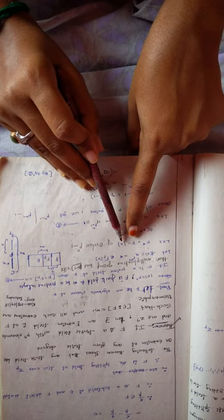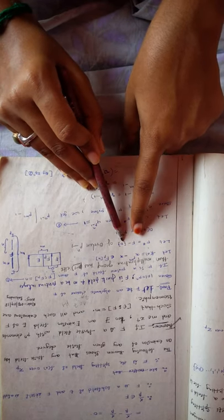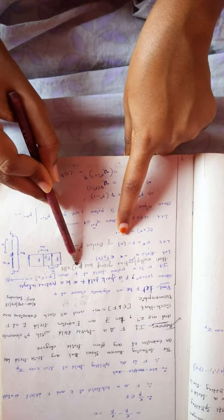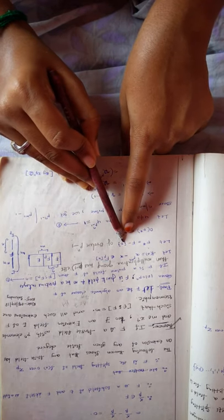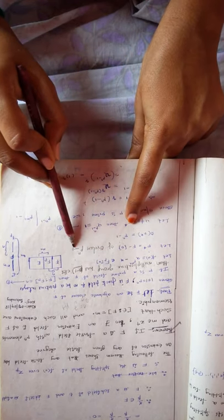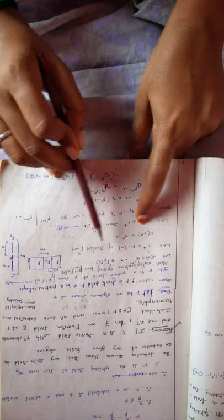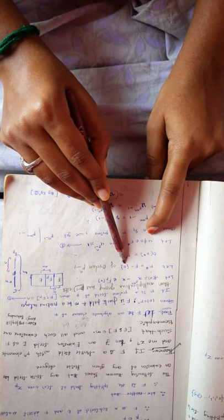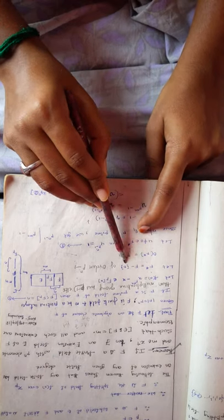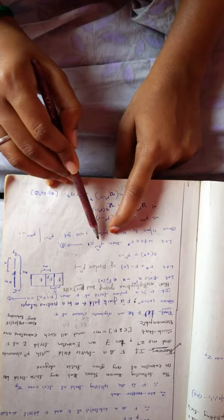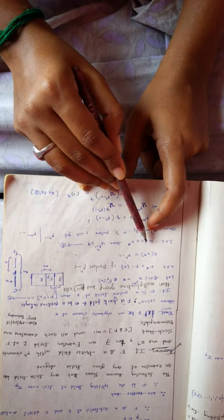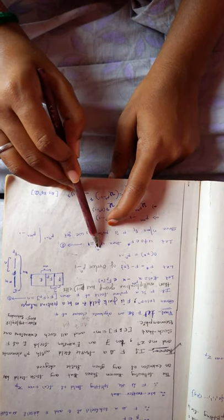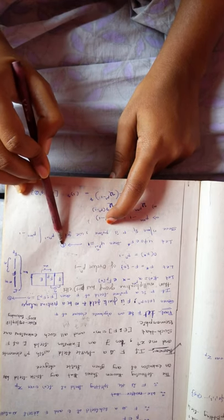Let F* = F \ {0}. We take an element from F*. The order of F* equals p^n - 1. Let u ≠ 0 belong to F*. Then u to the power of the order of F*, which is p^n - 1, equals 1. So u^(p^n - 1) = 1. Let this be equation 2.